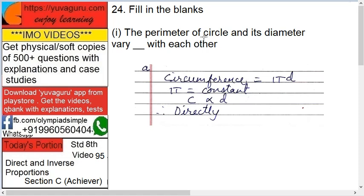Next, fill in the blanks. The perimeter of a circle and its diameter vary dash with each other, means directly or indirectly. Perimeter means what? Circumference. Circumference formula is what? Pi D.